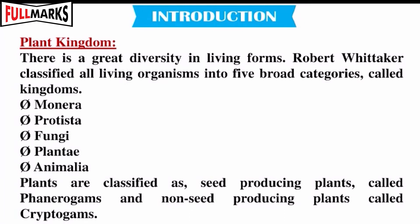Introduction to the Plant Kingdom. There is a great diversity in living forms. Robert Whittaker classified all living organisms into five broad categories called kingdoms: Monera, Protista, Fungi, Plantae, and Animalia. Plants are classified as seed-producing plants called Phanerogams and non-seed-producing plants called Cryptogams.